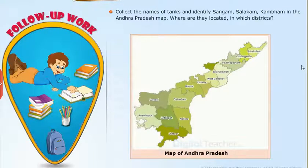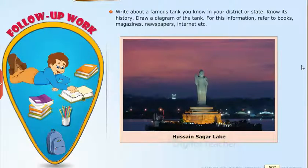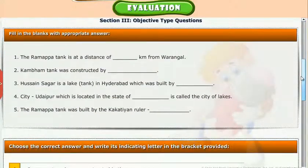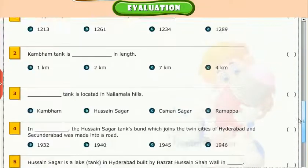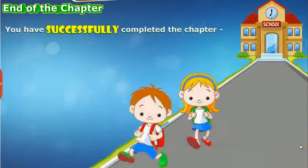Collect the names of tanks and identify Sangam, Salakam, and Kambam on the Andhra Pradesh map. Write about a famous tank you know in your district or state, know its history, and draw a diagram of the tank. For this information, refer to books, magazines, newspapers, internet, etc. Evaluation: test your understanding of the chapter by taking the mock unit test. You have successfully completed the chapter Our Village, Our Tanks.